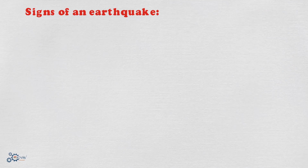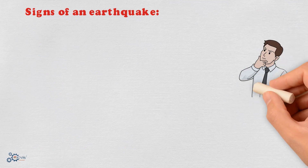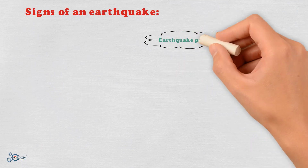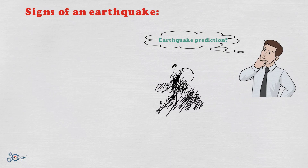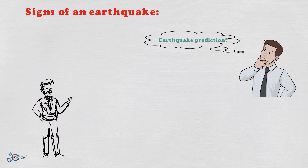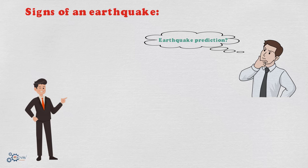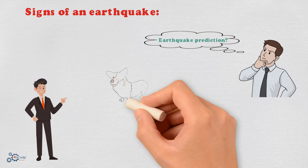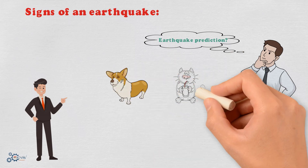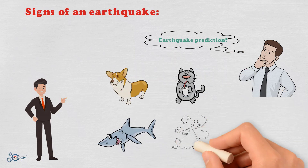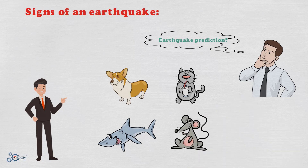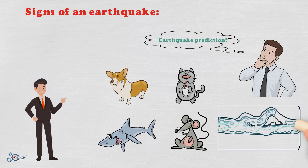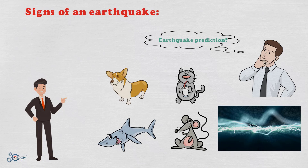Signs of an earthquake: according to geologists, it is practically impossible to predict where and when earthquakes will occur. However, experts have pointed out a few tell-tale signs that an earthquake may be imminent. Firstly, observe the behavior of animals such as dogs, cats, fish, squirrels, mice, etc. to see if they have any unusual behaviors. This is because the movement of the rock layer below the ground before the earthquake creates electric waves that some animals can detect, and they can feel weak shock waves before humans can.